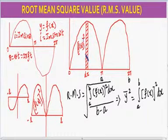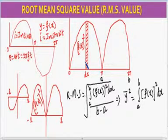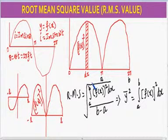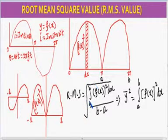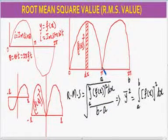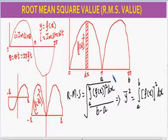Therefore, the root mean square value can be taken as the square root of the integral from a to b of [f(x)]² dx, divided by (b − a). Here b − a is the base of the interval from a to b.